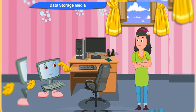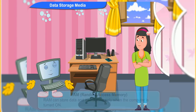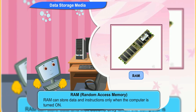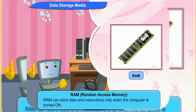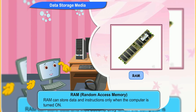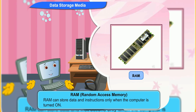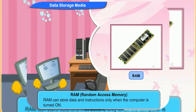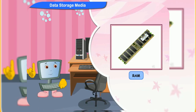The full form of RAM is random access memory. RAM can store data and instructions only when the computer is turned on. You can read and write data on this temporary memory. If the power suddenly goes out, all the data stored on it is lost.